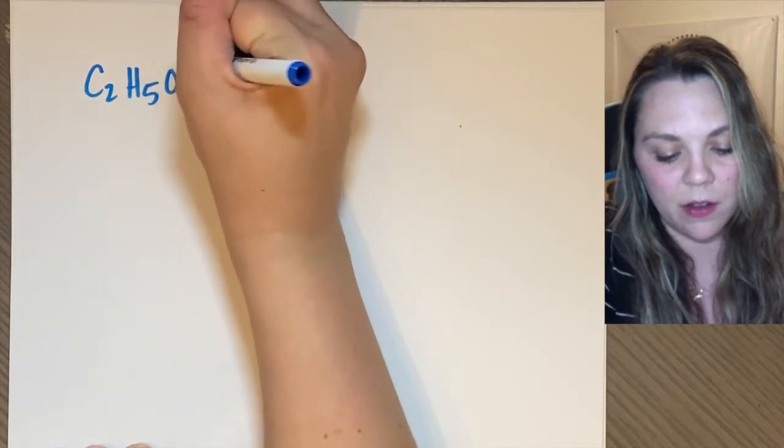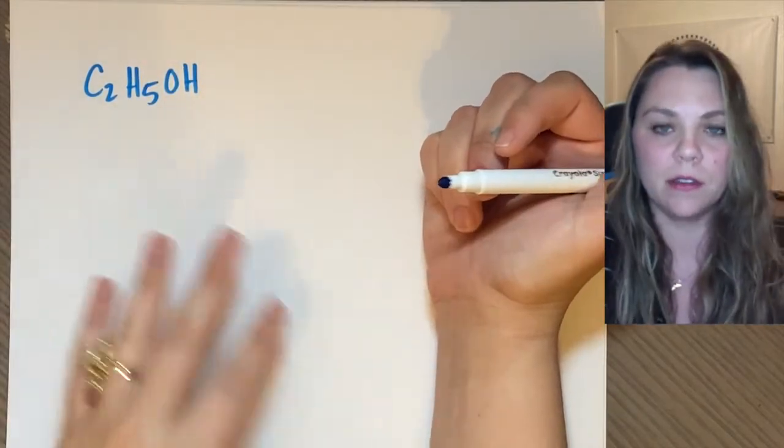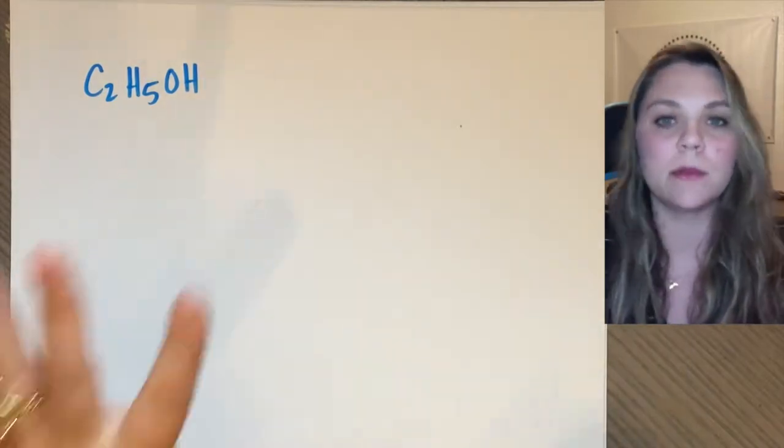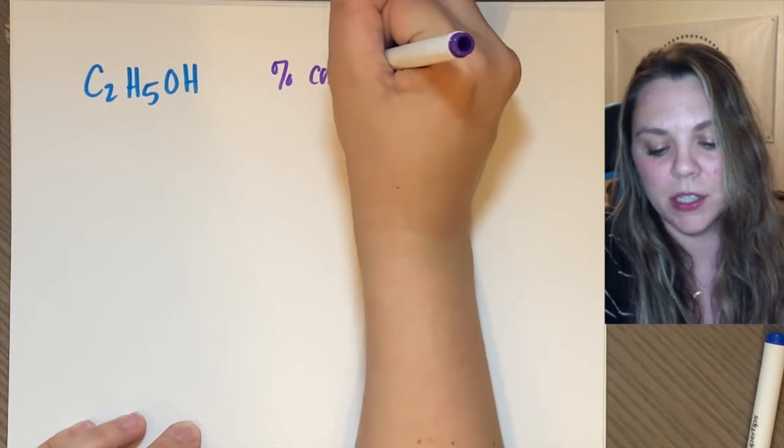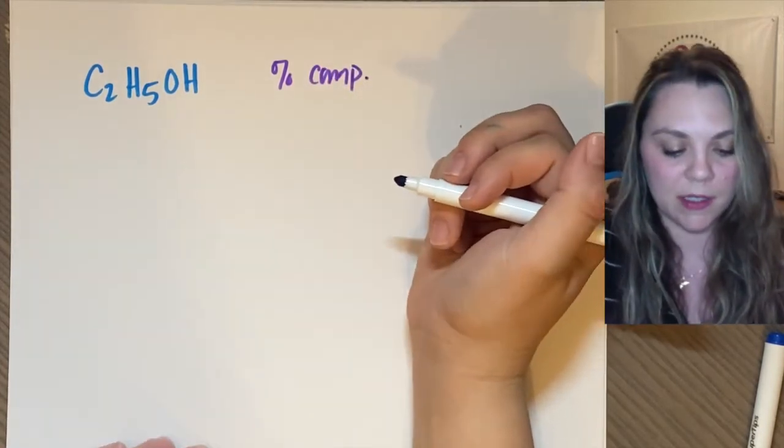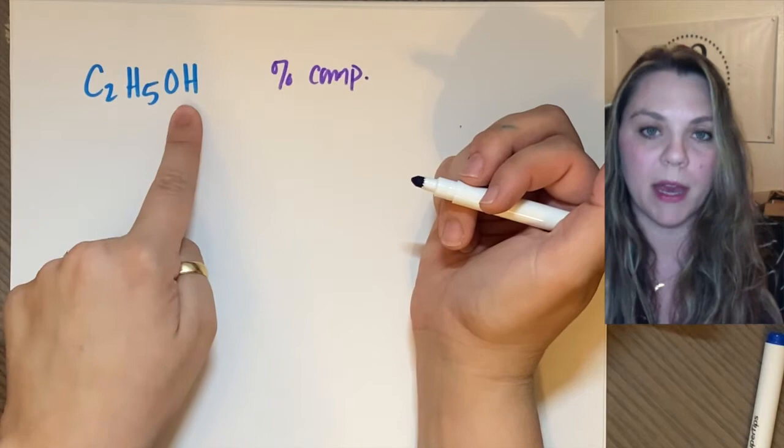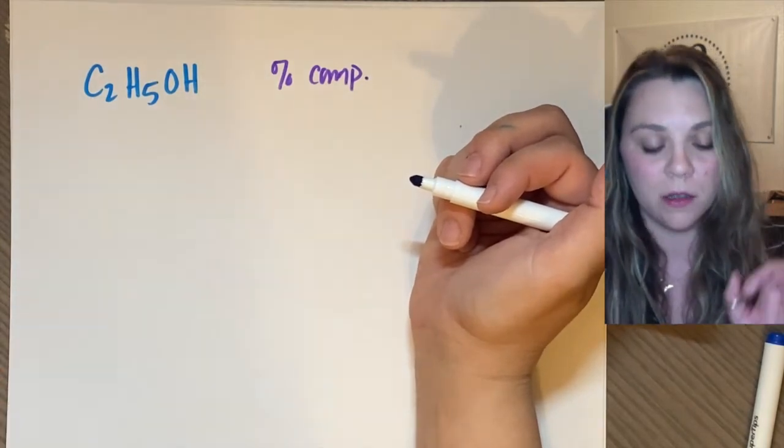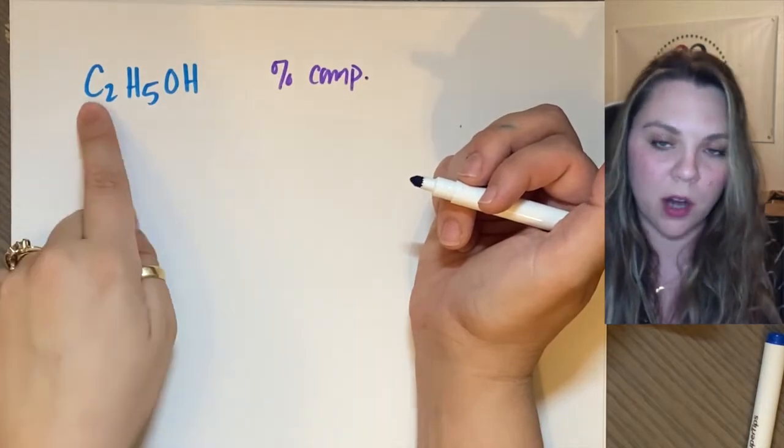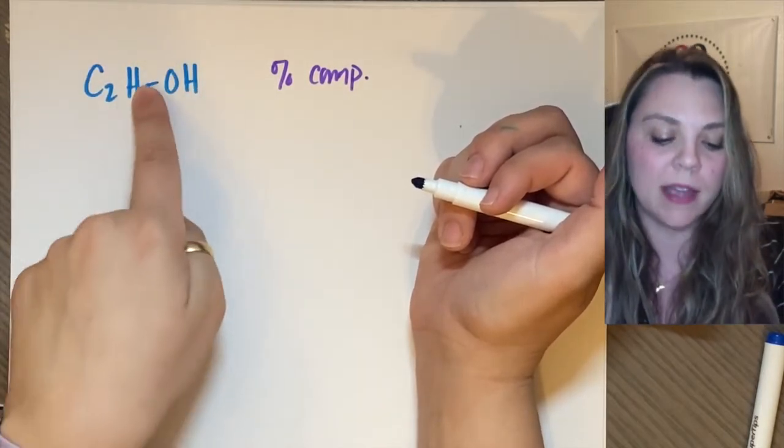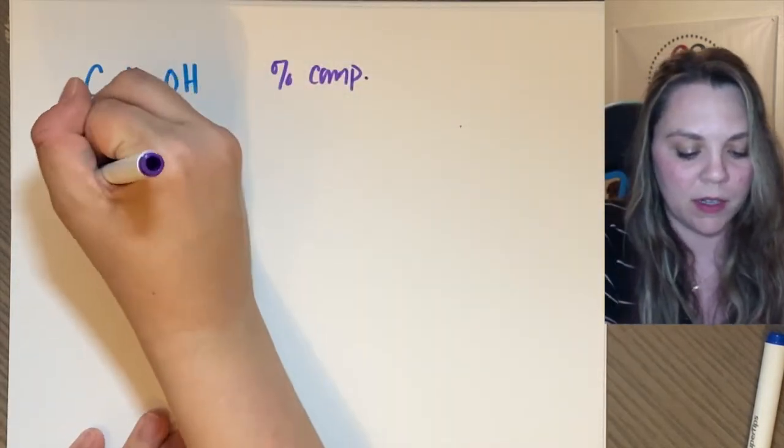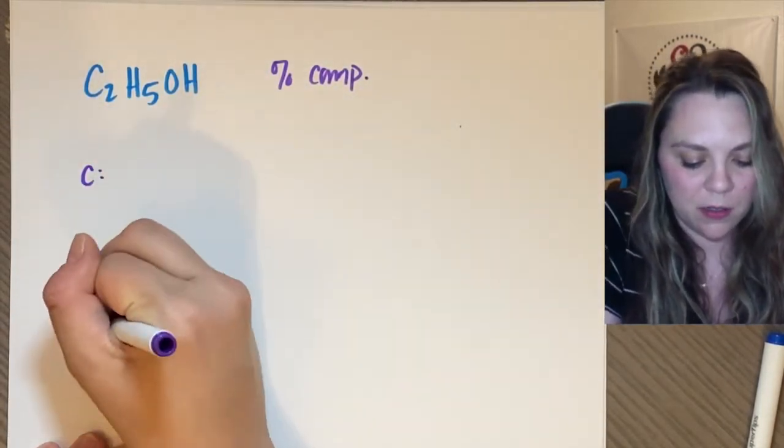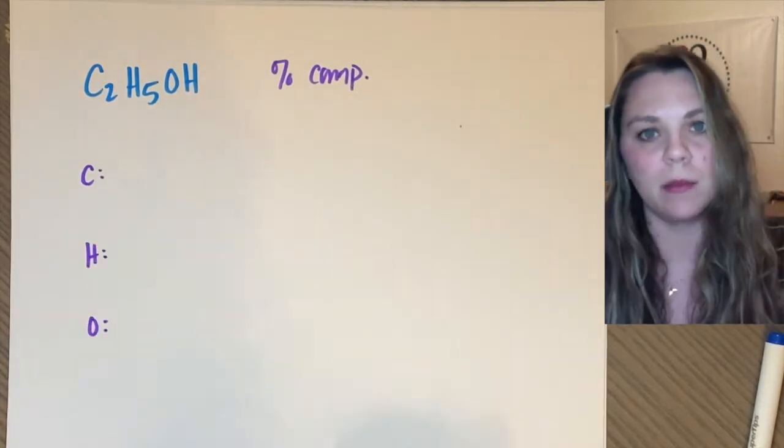An example would be C2H5OH. This is ethanol, a random compound, and you need to figure out the percent composition. All that means is I need to break it apart by the different elements and figure out by mass what percent of this compound is carbon, what percent of its mass is hydrogen, what percent of its mass is oxygen. I'm going to figure it out for carbon, for hydrogen, for oxygen, for each element within the compound.